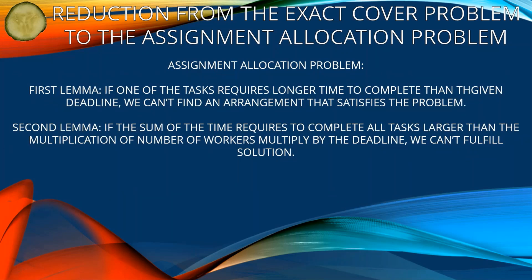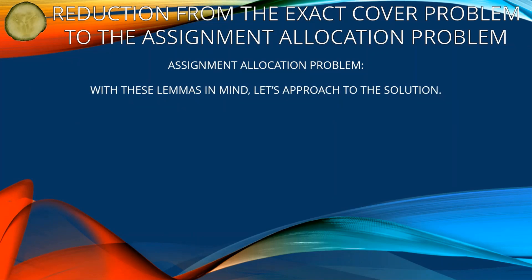First lemma: if one of the tasks requires longer time to complete than the given deadline, we can't find an arrangement that satisfies the problem. Second lemma: if the sum of the time required to complete all tasks is larger than the number of workers multiplied by the deadline, we cannot fulfill a solution. With these lemmas in mind, let's approach the solution.